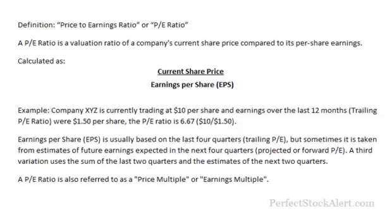Let's give an example. XYZ company is currently trading at $10 per share and earnings over the last 12 months — this would be the trailing PE ratio — were $1.50 per share. The PE ratio is then 6.67: it's $10 divided by $1.50 in earnings.